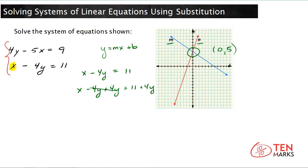The 4y's over here cancel out to 0 and you're left with x equals 11 plus 4y on the right side. What this means is now you've come to an expression that is equivalent to x. So 11 plus 4y can be used as x in any equation where the variable x appears. And this is where the substitution part comes into play.